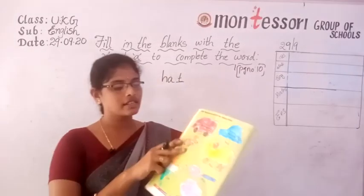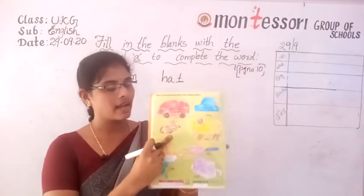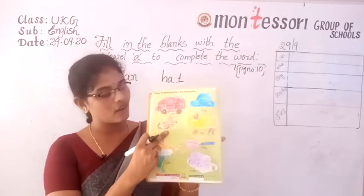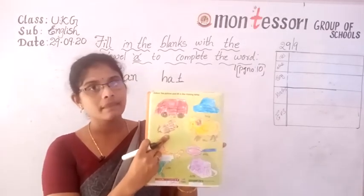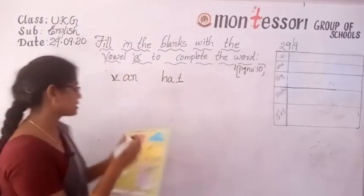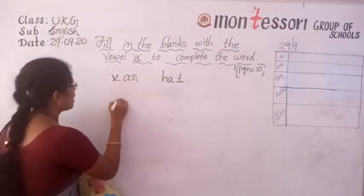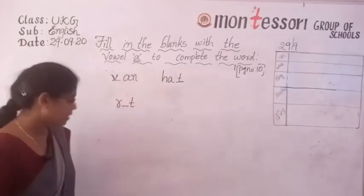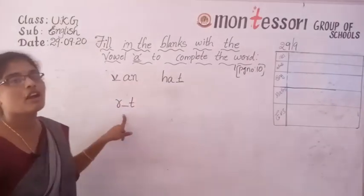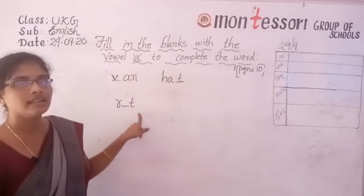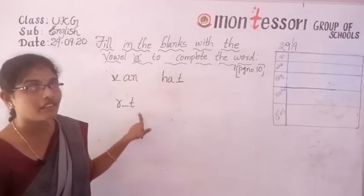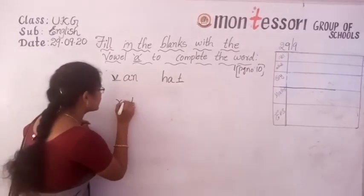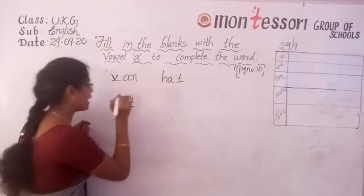Now next picture. What is this — cat or rat? It is a rat. They have given R-dash-T. What is the spelling of rat? We have to fill in A. R-A-T, rat. All of you write with pencil.